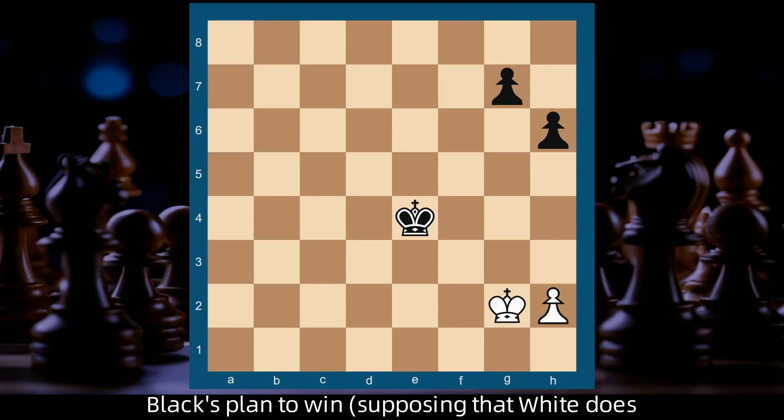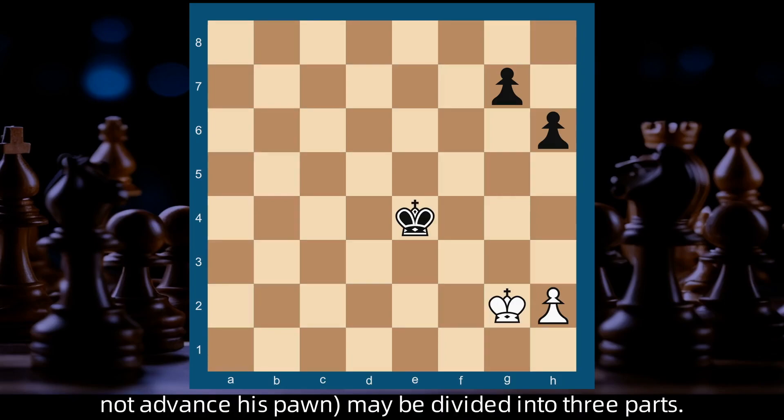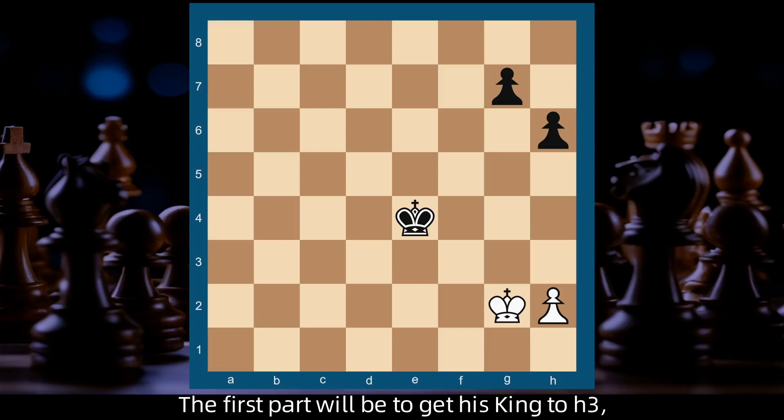Supposing that White does not advance his pawn, may be divided into three parts. The first part will be to get his king to h3, at the same time keeping intact the position of his pawns.